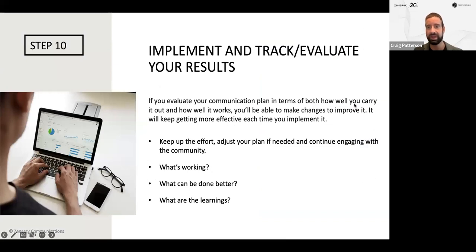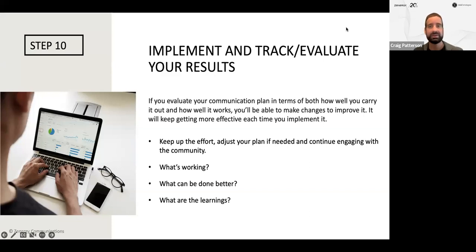Step number ten: implement and track and evaluate your results. Start doing it. If you evaluate your communication plan in terms of how well you carry it out and how it works, you'll be able to make changes to improve it. It's going to keep getting more effective each time you implement it. You can adjust the plan if needed while engaging with the community. What's working? Are people contacting you? Are you getting engagement on social media? What can be done better — could have used simpler language, a brighter font, reached out to a different group? Take down those learnings, take a positive spin, and keep doing it.